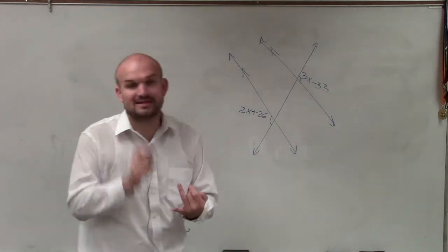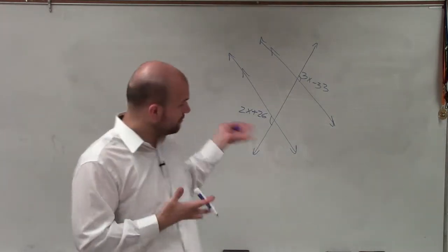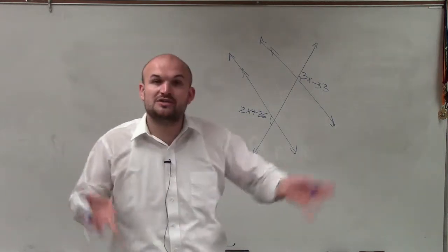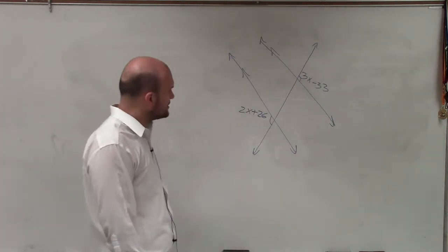Alternate interior, alternate exterior, corresponding, same side interior. We need to identify what type of angles we have so we can create an equation, because that's exactly what we want to do—create an equation to solve for x. Looking at these angle relationships, I see that they are both exterior of our parallel lines.